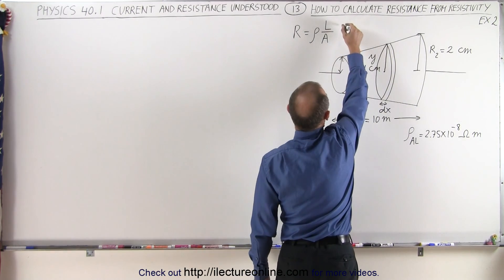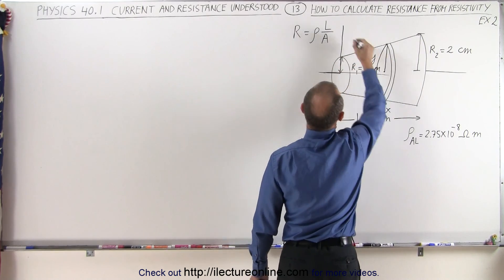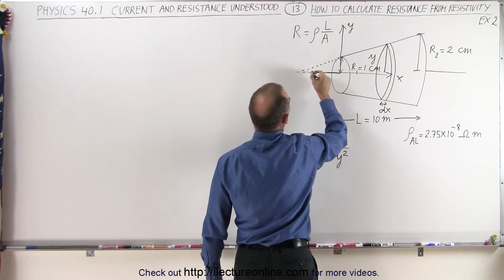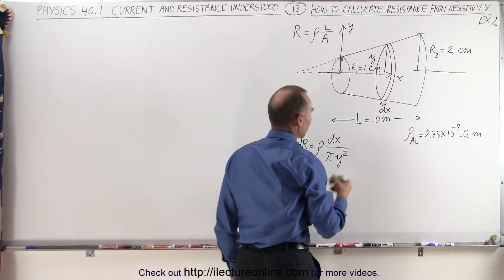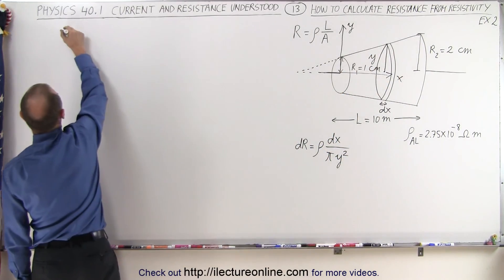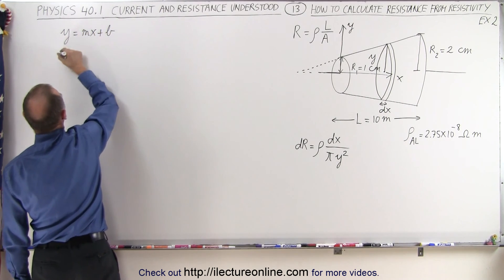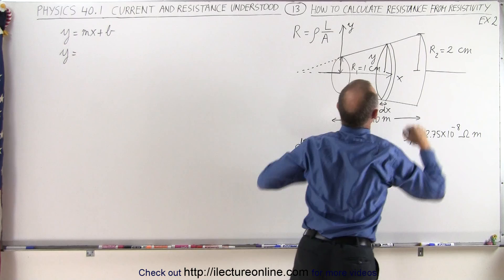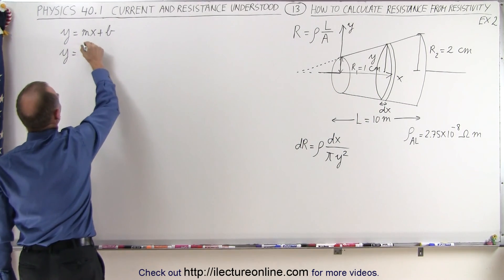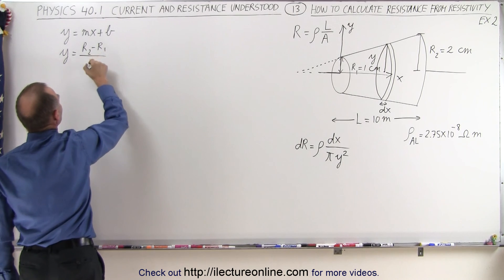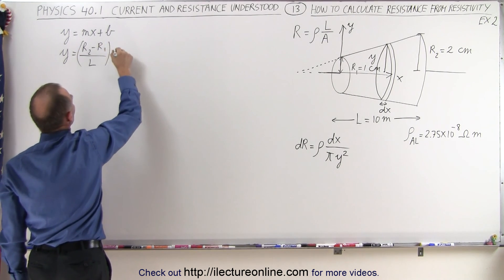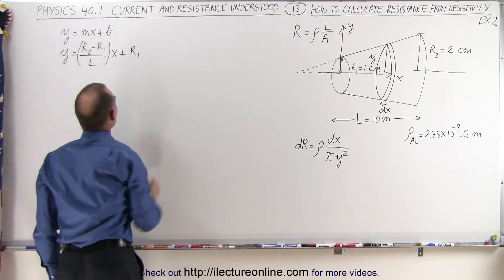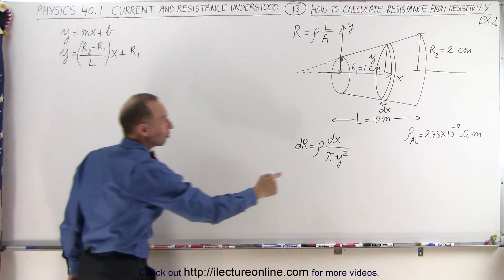If this is the y-axis and this is the x-axis, then we can see that this would be the equation of a straight line. The equation of a straight line: y equals mx plus b. In our case, y equals the slope — the slope is rise over run. The rise is the difference in the radii, r2 minus r1, divided by the run, which is L. That's the slope times x, plus b, the y-intercept, which would be r1. That gives us the equation that goes in the denominator.